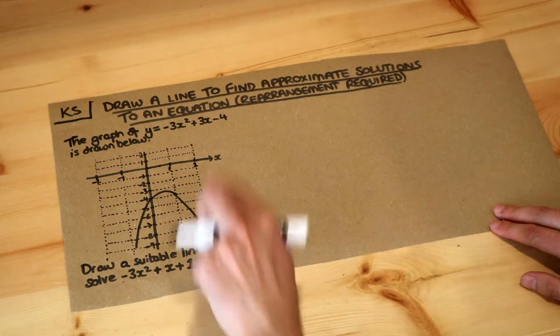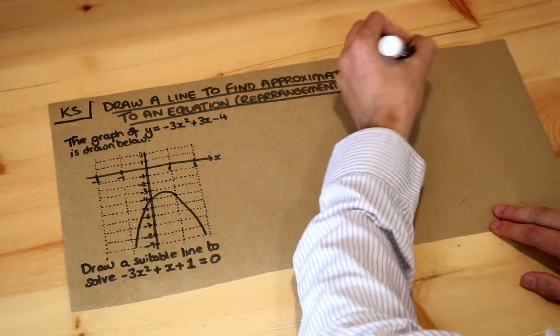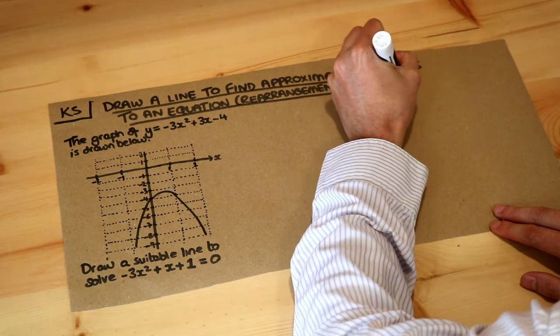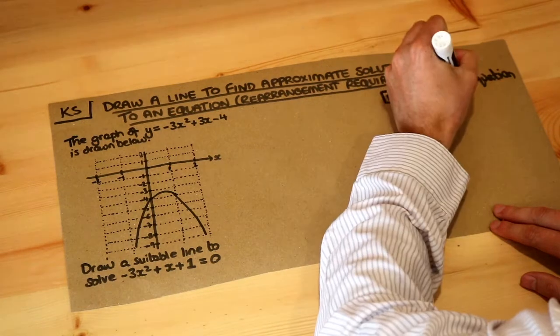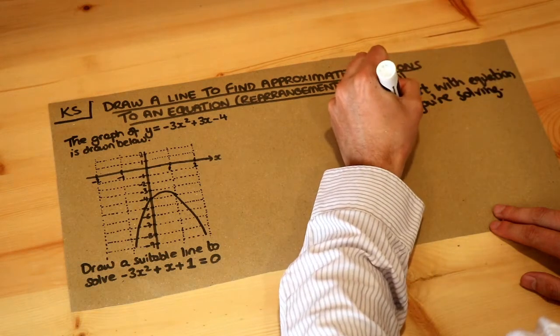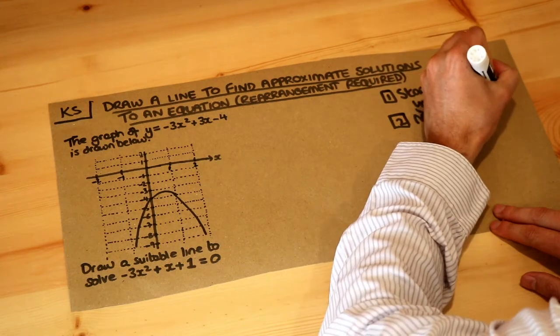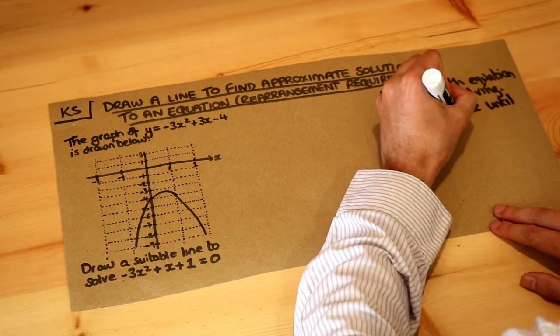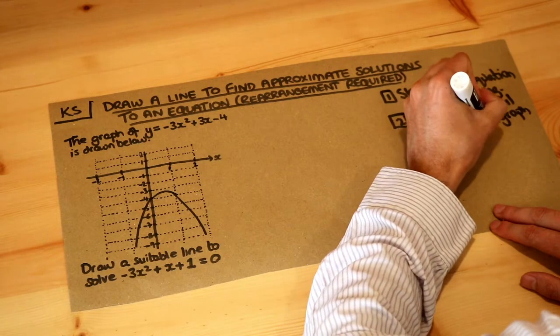The key is we always start with the equation we're trying to solve, so step one: start with the equation you're solving. Step two is to manipulate the equation until you have the graph equation on one side. Let's do that.